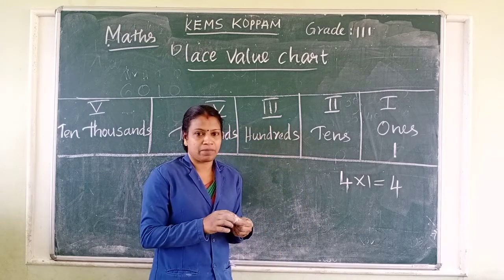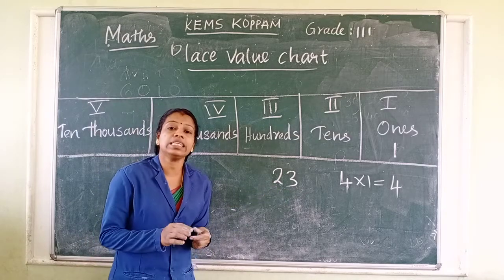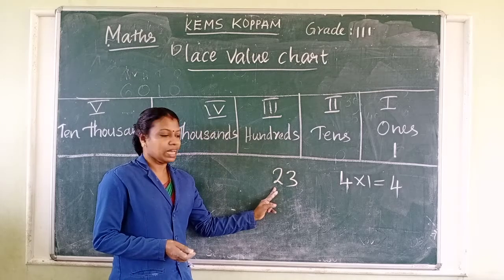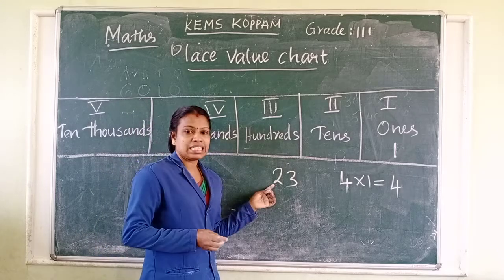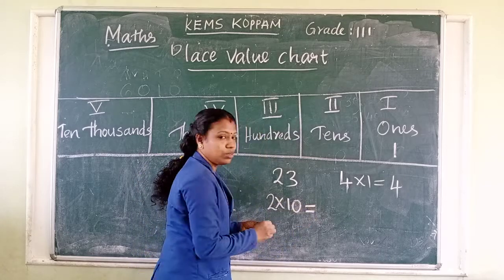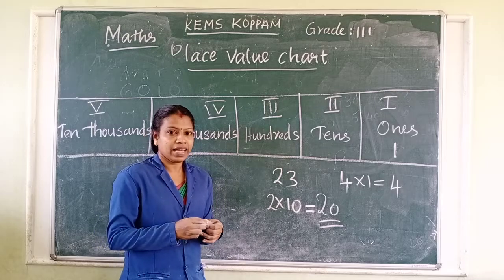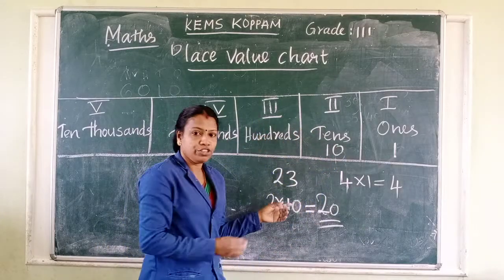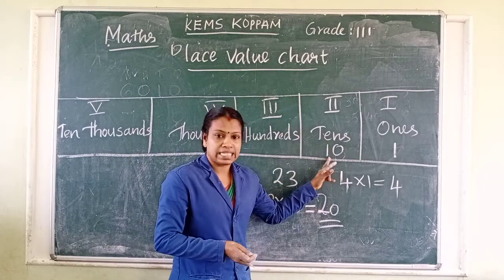Second place — tens place. Look at this example. The number is 23. How many digits? Two digits, two places: ones and tens. What is the tens place number here? It is two. The tens place number is two, and that place is tens, so two into ten equals twenty. Twenty is the place value of two. The second place value is ten.